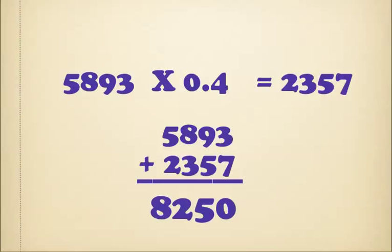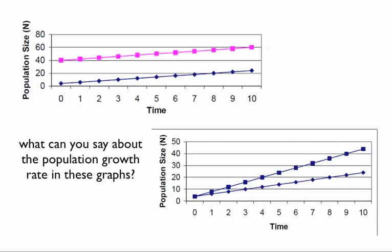Compare graphs. We said the first population at the top is growing, has the same growth rate, but started at different population sizes. And the second one has two different growth rates that started at the same population size.